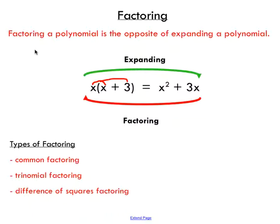First, it's important to know what factoring is. If you've been following these video lessons, we did a tutorial on the distributive property. Factoring is the opposite of expanding. For example, a binomial multiplied by a monomial gets distributed into the brackets — that's expanding. Factoring is going backwards: if I have an expression, I want to identify something that's common and pull it outside the brackets.